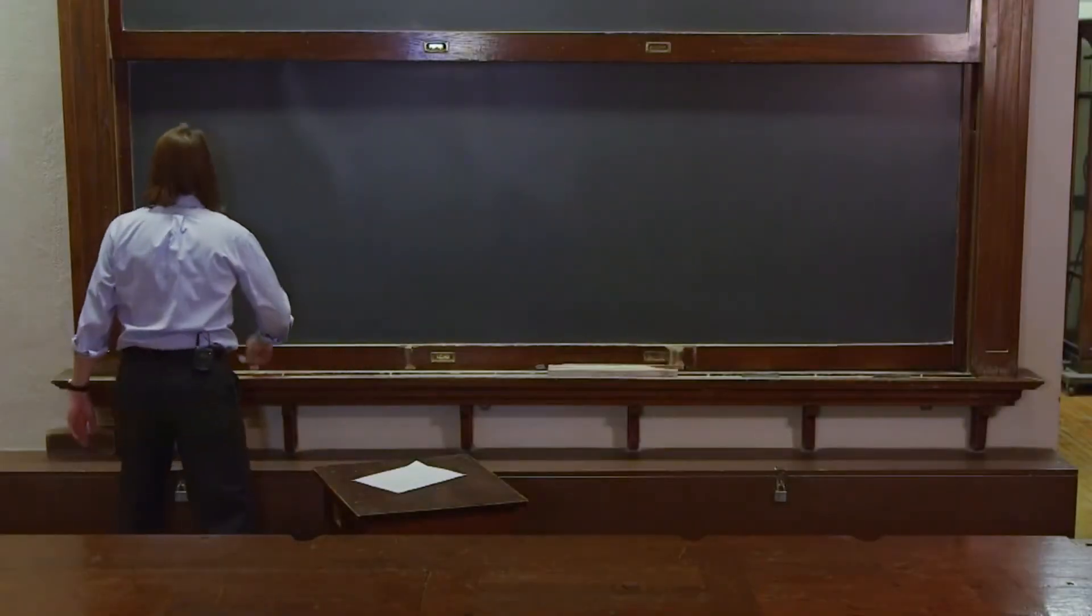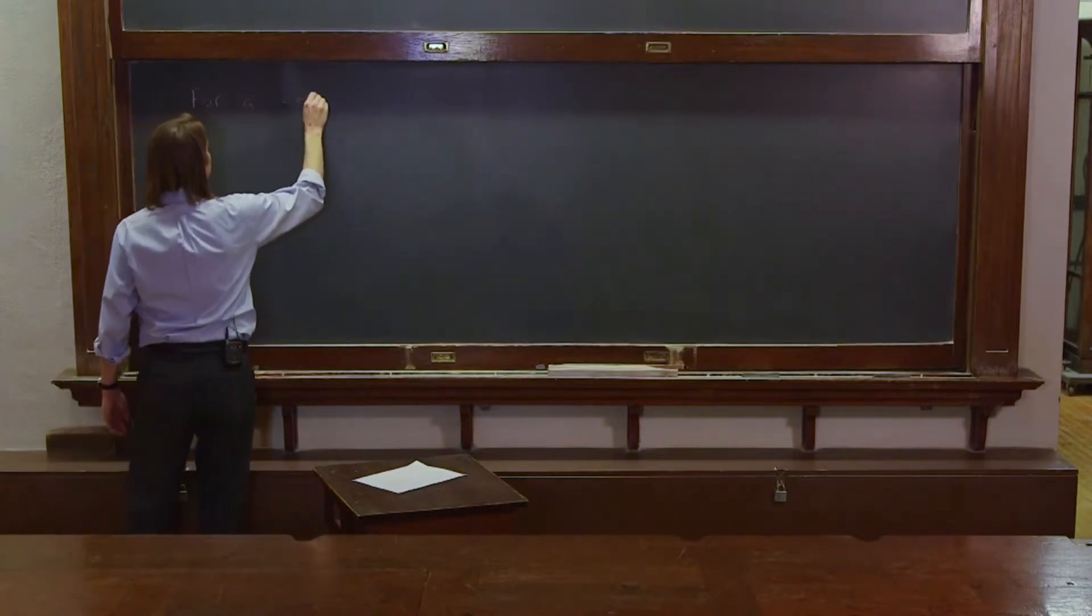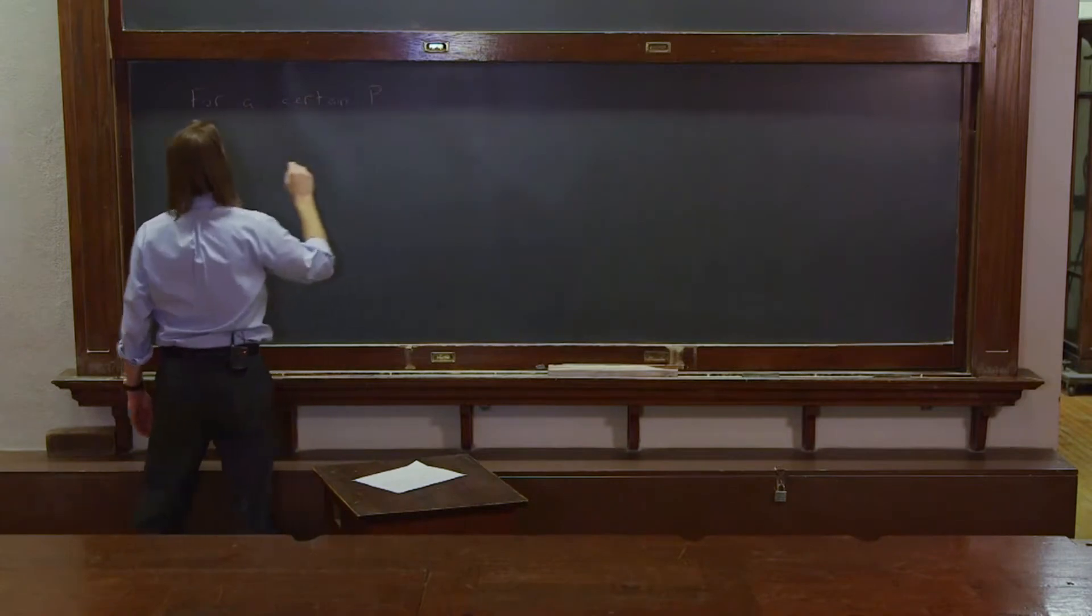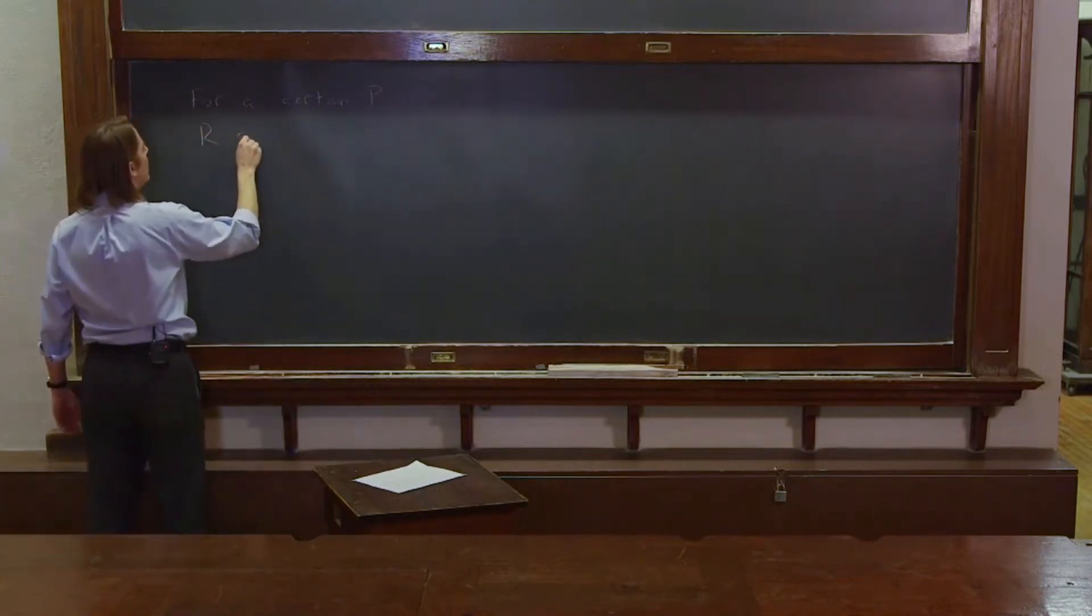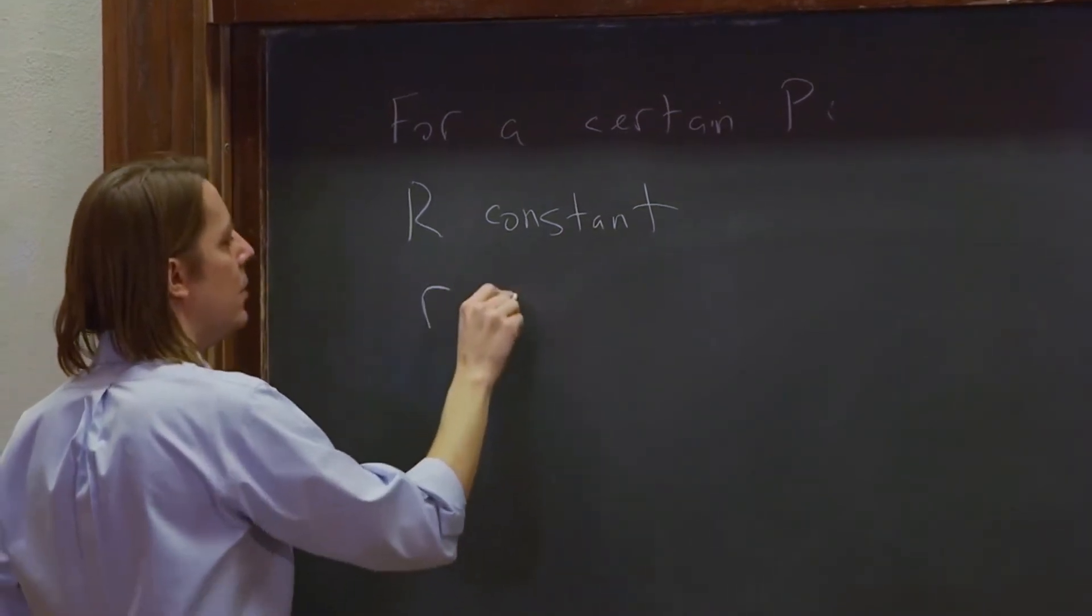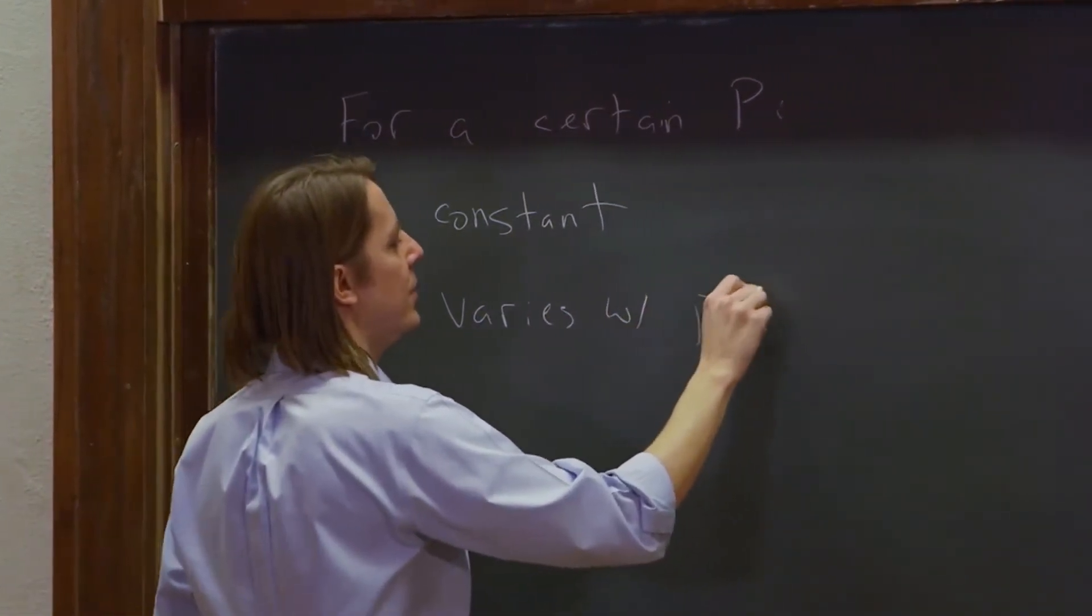For a certain point P, or for any point P, a single point P, let's remember that big R is constant and little r varies with position in the slit, in the aperture.